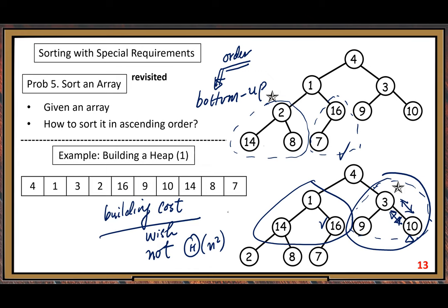The good news is: the building cost is big-Theta of just n — no square. That's acceptable, that's pretty fast, so we can take it. But we need to understand why it is big-Theta of n.